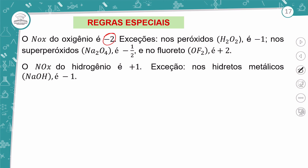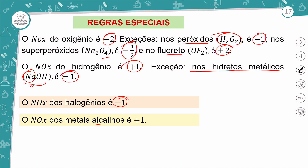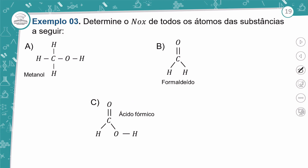Regras especiais para determinar o NOX: o NOX do oxigênio é −2, exceto nos peróxidos (NOX = −1), nos superóxidos (NOX = −½) e quando ligado ao flúor no fluoreto de oxigênio (NOX = +2). O NOX do hidrogênio é sempre +1, exceto nos hidretos metálicos (NOX = −1). O NOX dos halogênios é −1, dos metais alcalinos é +1, e dos metais alcalino-terrosos é +2.